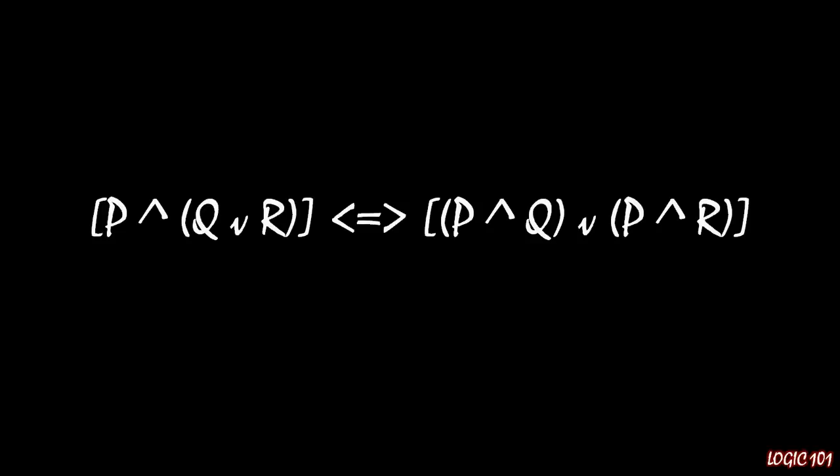Now, distribution works in the same way if we flip-flop the conjunction with the disjunction. So look at that left side of the biconditional. Notice that we have P and Q or R, and now I'm going to switch this to P or Q and R. We can do the same distribution here. This is why this is called the distribution replacement rule. We can distribute the P and the disjunction into the inside of the parentheses.